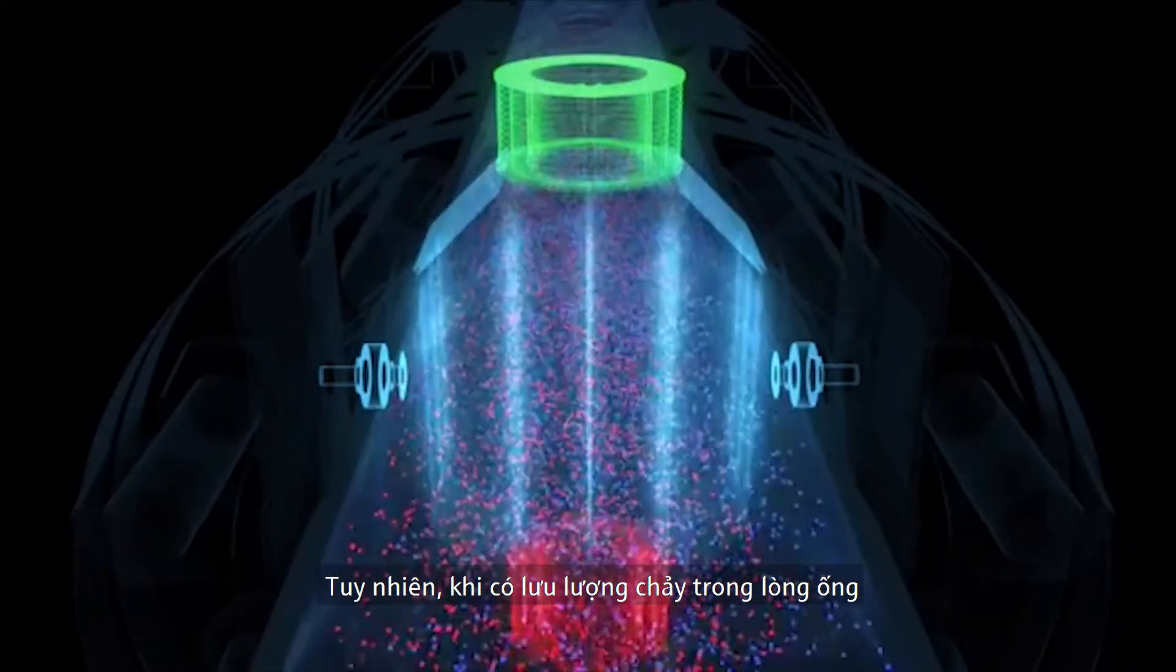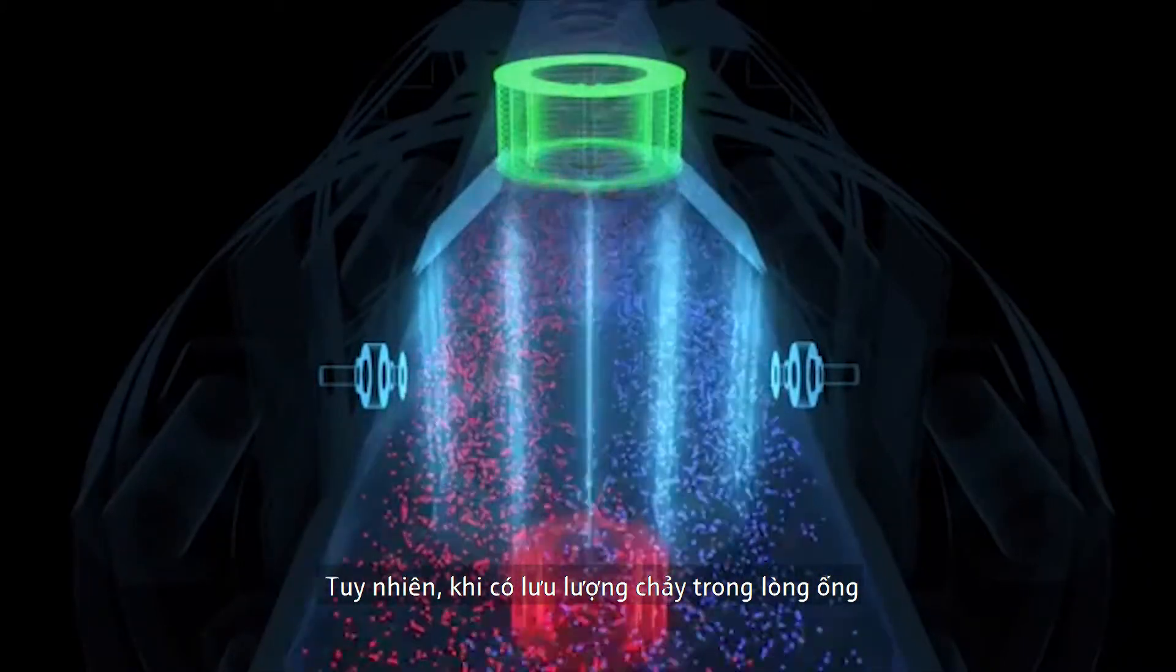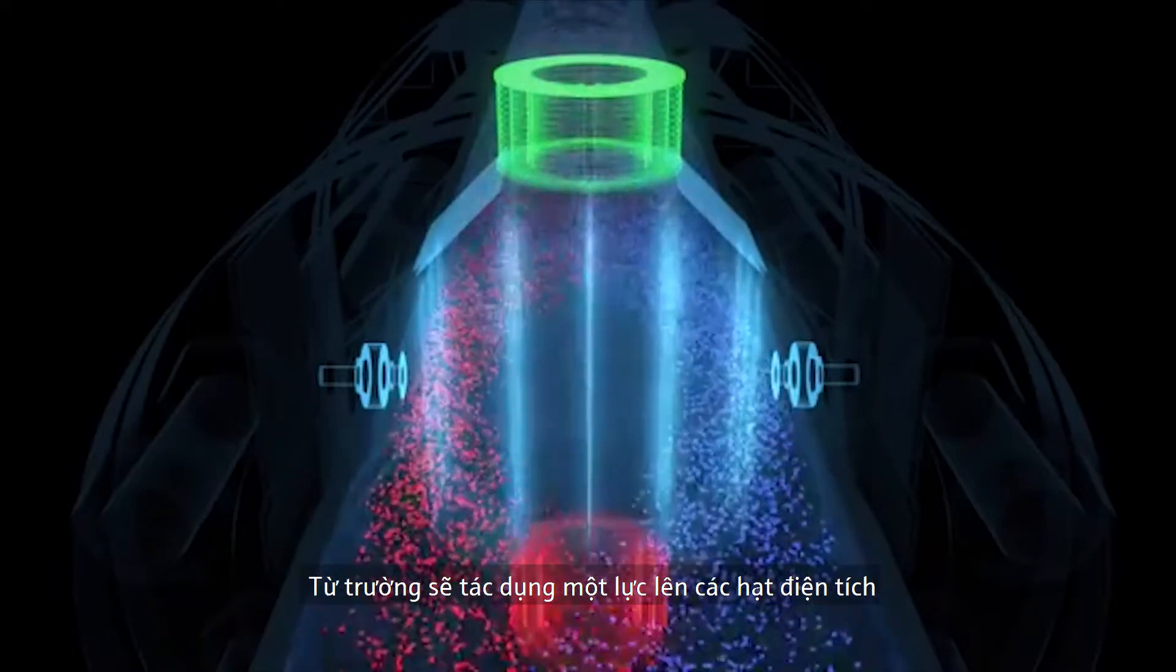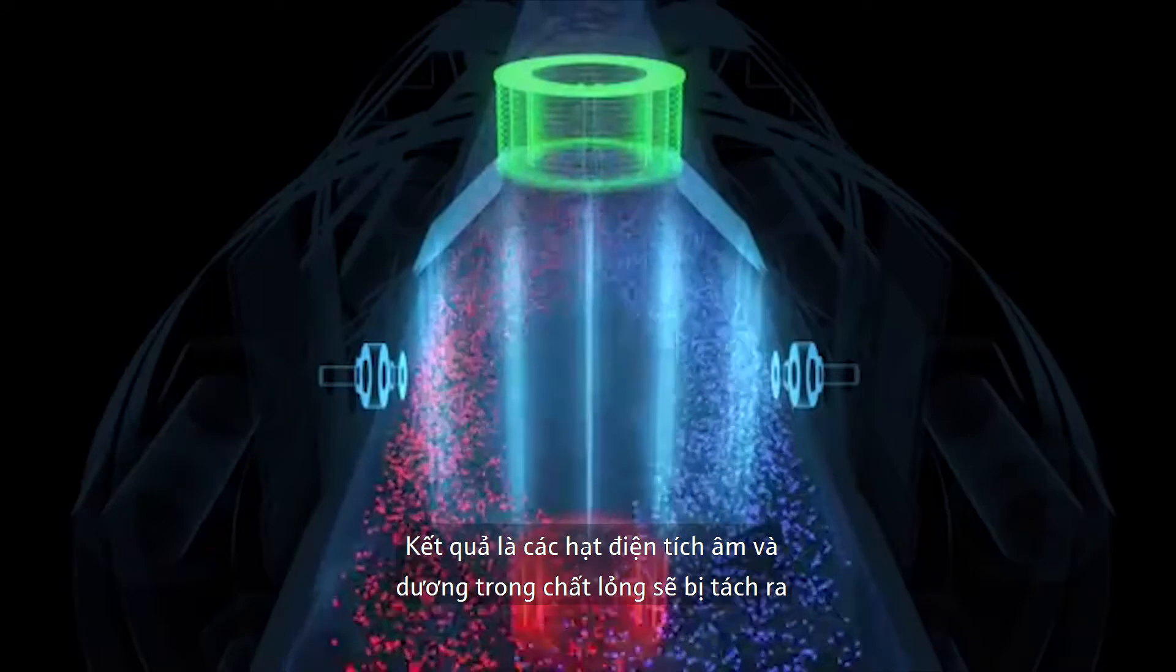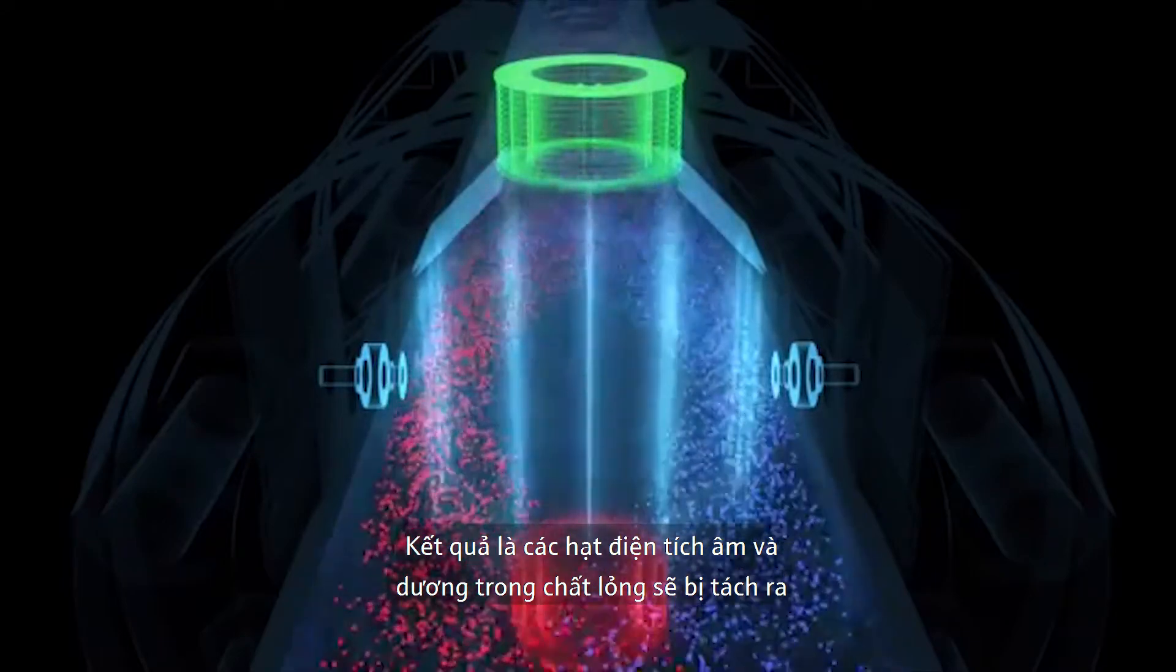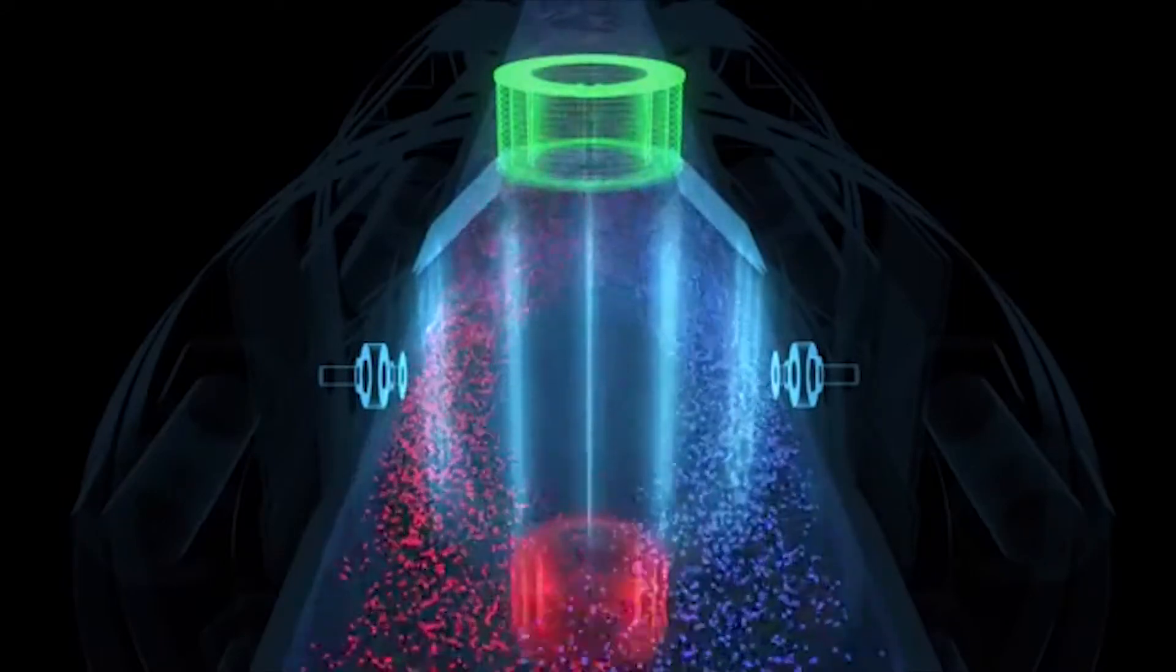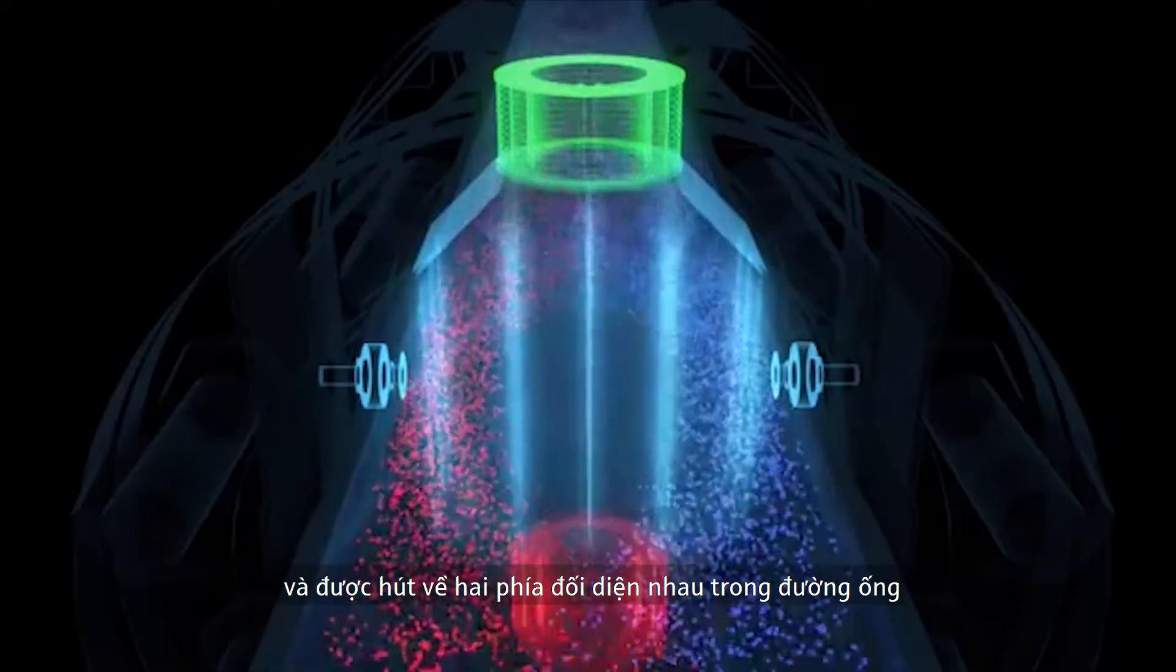However, as soon as the liquid starts to flow in the measuring tube, the magnetic field applies a force to the charged particles. As a result, the positively and negatively charged particles in the liquid are separated and collect on the opposite sides of the tube wall.